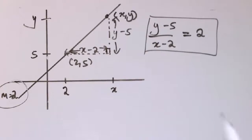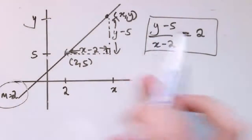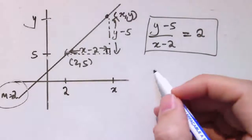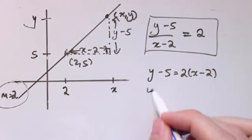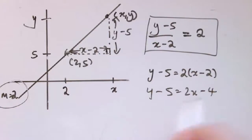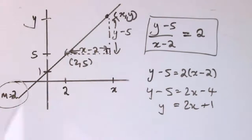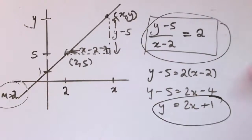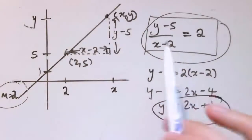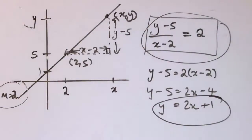That expression equals 2, because the gradient is 2 — so (y minus 5) divided by (x minus 2) equals 2 is an equation for this straight line. If I rearrange by multiplying both sides by (x minus 2), I get y minus 5 equals 2(x minus 2), and expanding and adding 5 gives y equals 2x plus 1. So the y-intercept is 1 and the gradient is 2, as expected. Both forms are equally valid equations of the line.